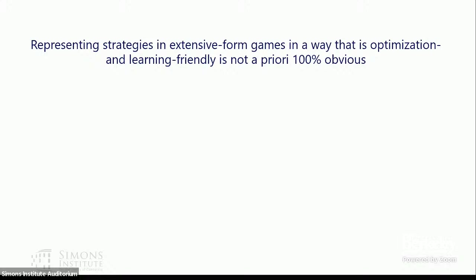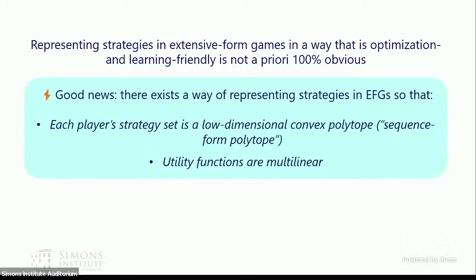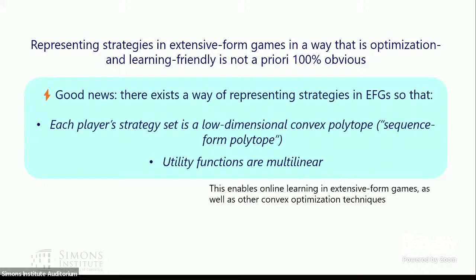There's a fundamental question: before we can do any type of learning over extensive form games, how do we represent strategies in a way that is optimization and learning friendly? The good news is that there exists a representation — the sequence form — where each player's strategy set is a low-dimensional convex polytope called the sequence form polytope, and the utility functions are multilinear. This enables online learning in extensive form games as well as other complex optimization techniques.